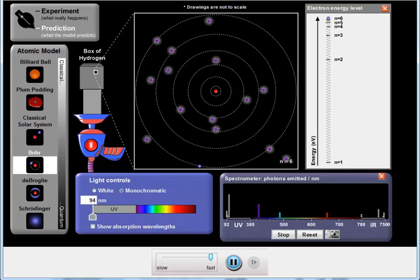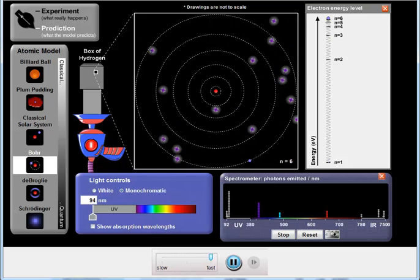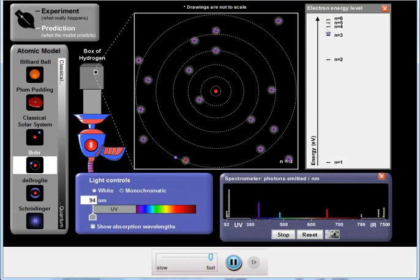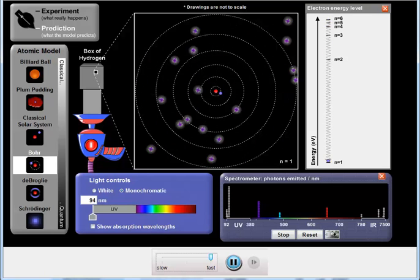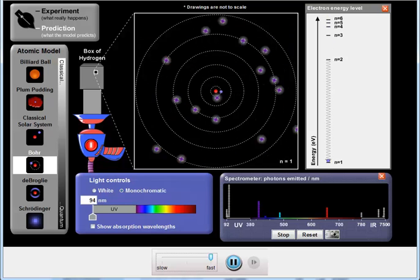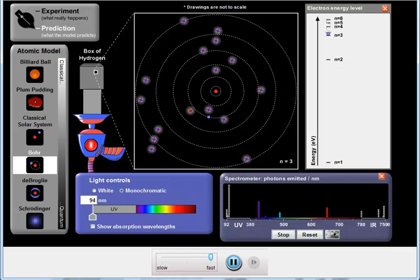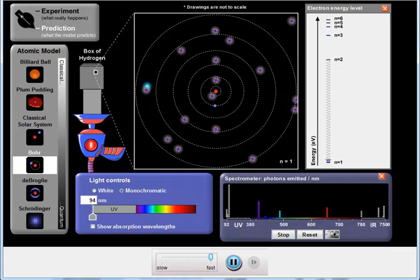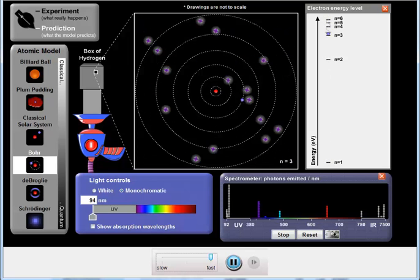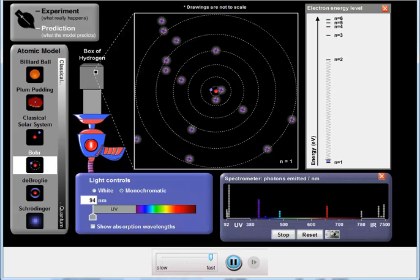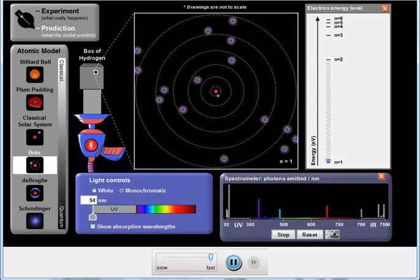Mostly ultraviolet. Because the ground state is n equals 1, it's reasonable to expect that there would be a lot of ultraviolet photons produced. Infrared in this region here would be transitions up in the n equals 6, 5, and 4 region. These here are transitions to n equals 3, the visible ones to n equals 2, and the ultraviolet ones to n equals 1.